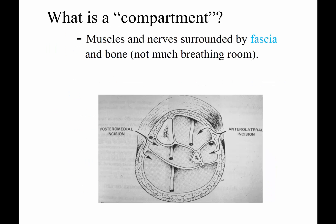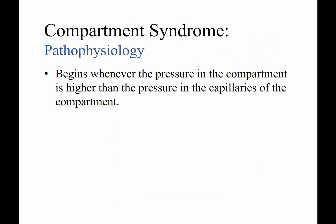It's important to know what a compartment is. Using a lower leg cross-section as an example: these are areas in the body where you have muscles and nerves surrounded or enveloped by fascia and bone without much breathing room. In the lower leg, you have the tibia, the fibula, the interosseous membrane, and then you have an anterior compartment, a lateral compartment, a deep posterior compartment, and a superficial posterior compartment.